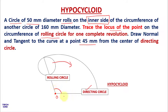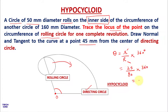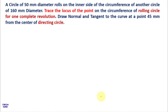We have to find the sector angle using the formula: theta = (small r / big R) × 360°, where small r is the rolling circle radius and big R is the directing circle radius. In this case it is (25 / 80) × 360°, which gives approximately 112.5 degrees. So theta is 112.5 degrees.